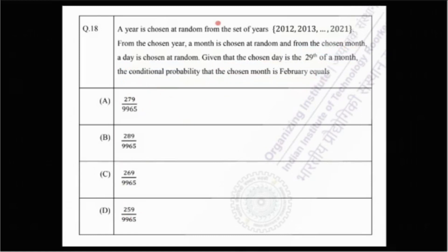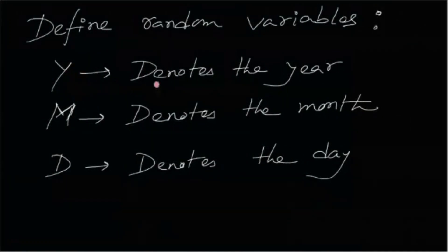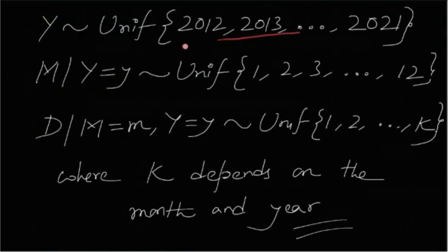So what are we going to do? First, we are going to define the variables. Let Y denote the year, M denote the month, and D denote the day. These three are random variables. Clearly, we can see that Y follows a discrete uniform over this set, because Y denotes the year and it is given that the year is chosen at random from this set.